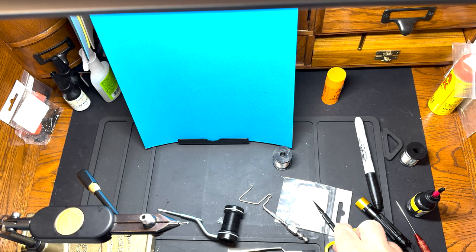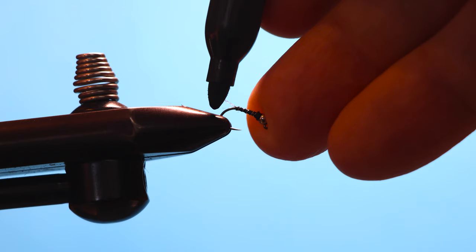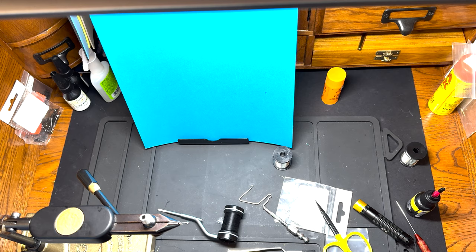I'm just going to make these just a hair shorter, and I'm going to take a black sharpie and just mark the ends of that. And that's it, kind of an enhanced zebra midge for pressured fish.